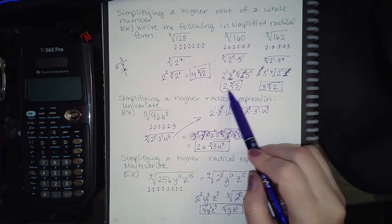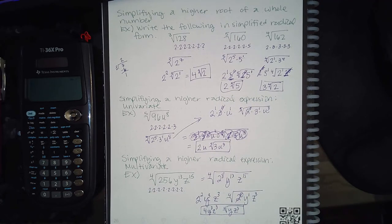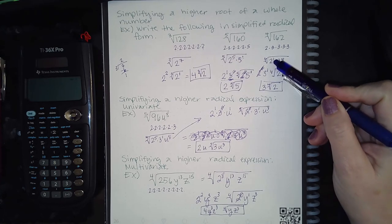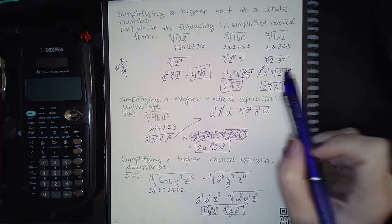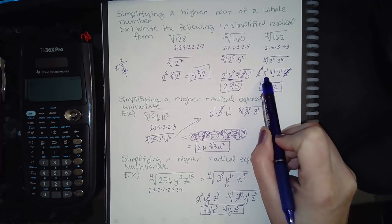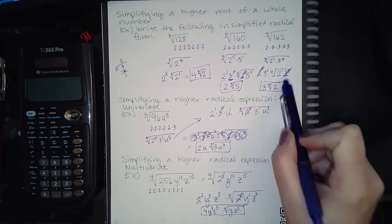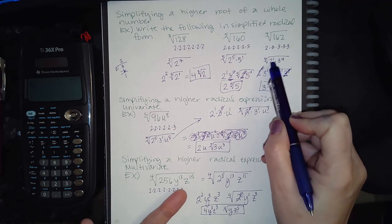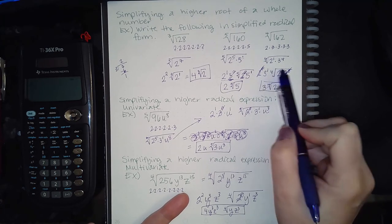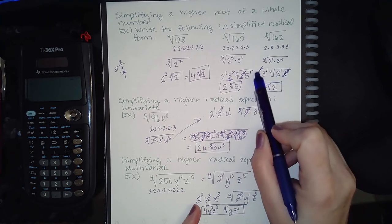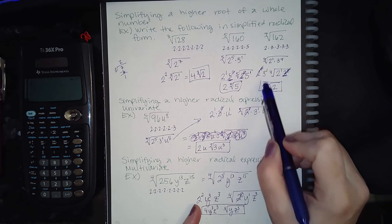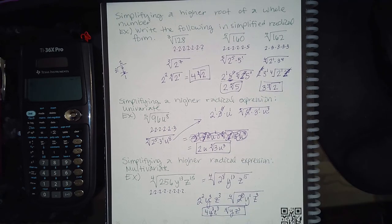For the fourth root of 162, the chart shows it equals 2¹ · 3⁴ — a single 2 and four 3s. My two bases are 2 and 3, so I wrote 2, 3, 2, 3 and applied the division method. Four goes into 1 zero times with 1 left over; four goes into 4 one time with zero left over. So the 3 with zero remainder isn't inside — I end up with a single 3 on the outside and a single 2 on the inside: the final answer is 3 times the fourth root of 2.